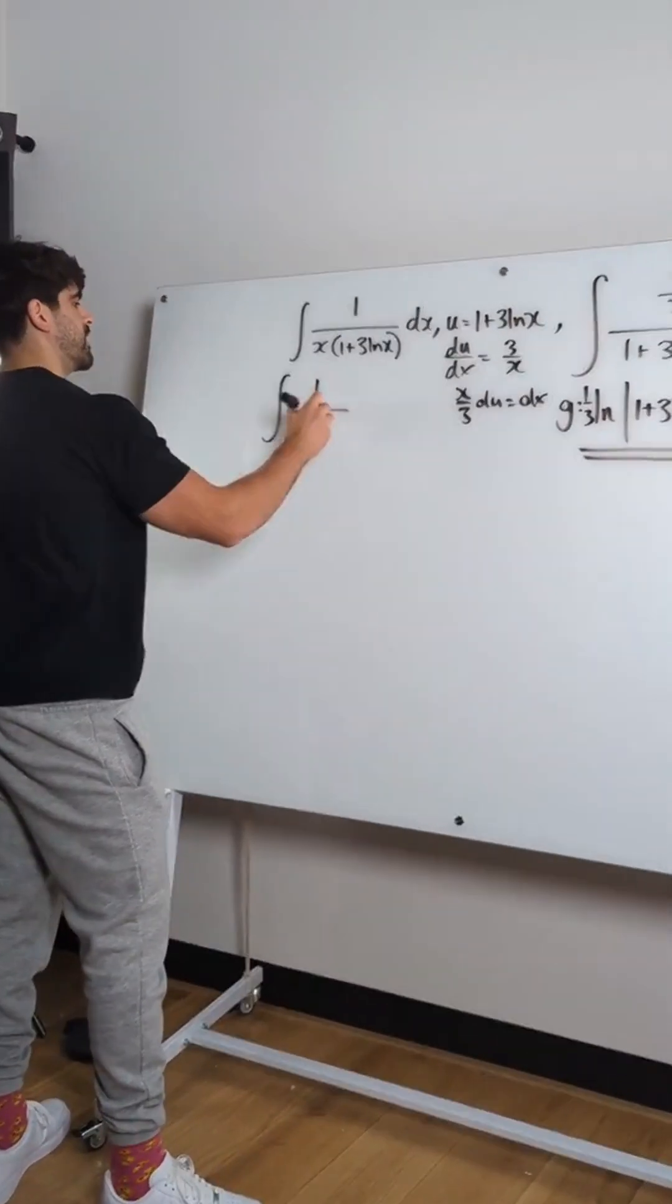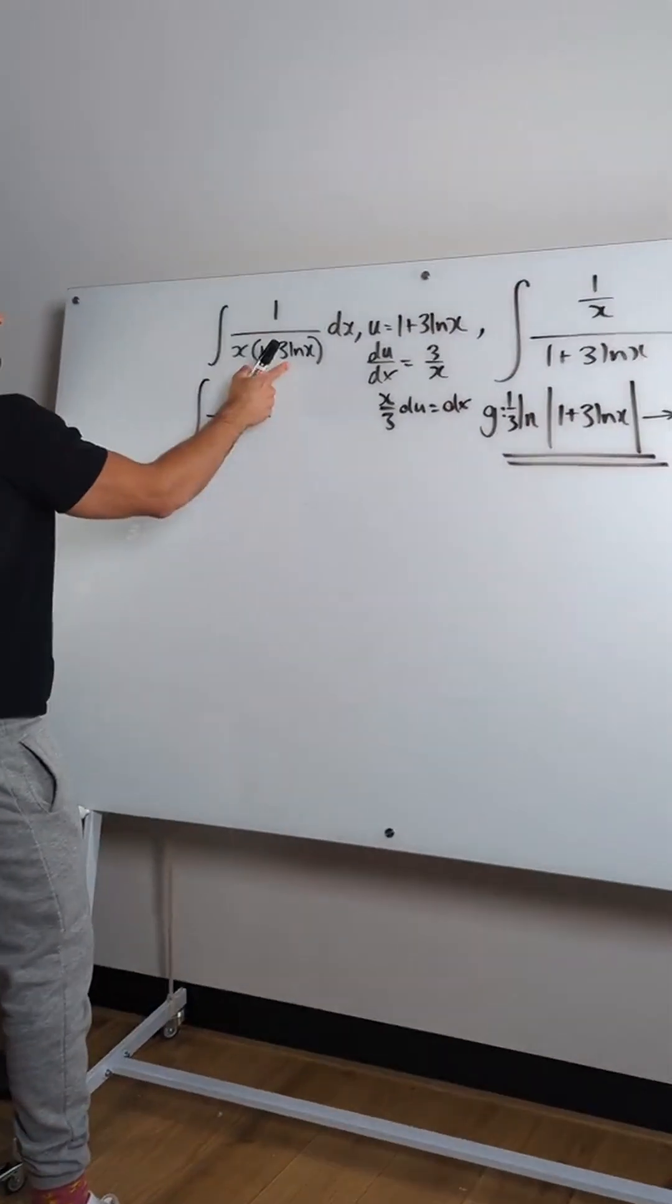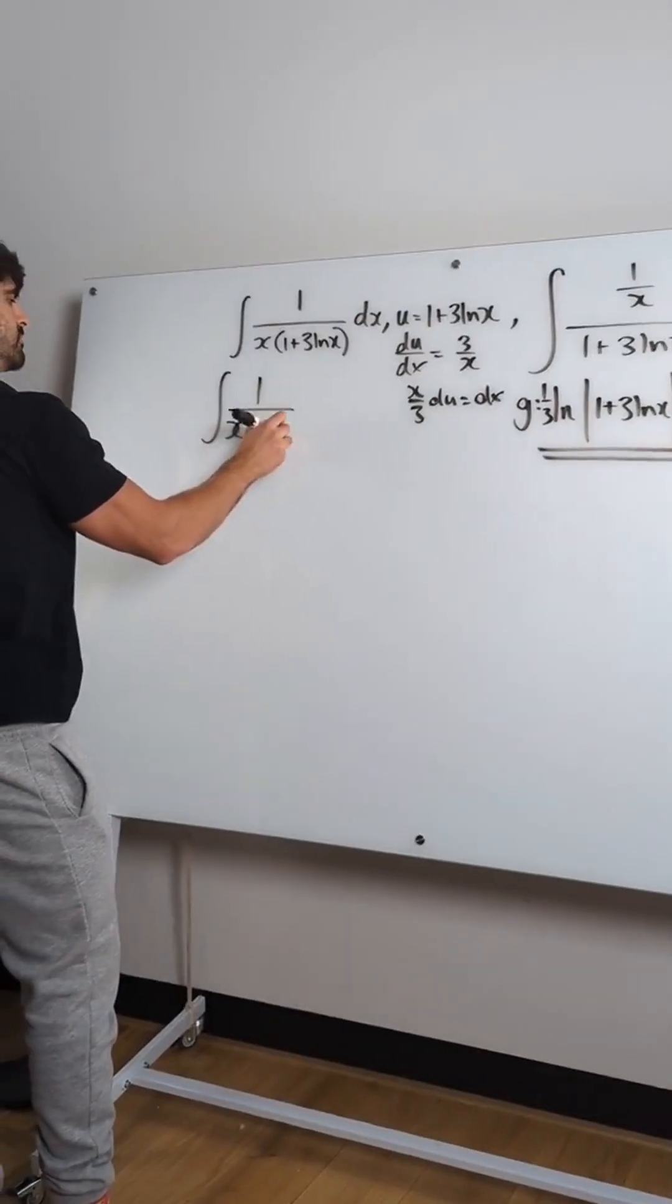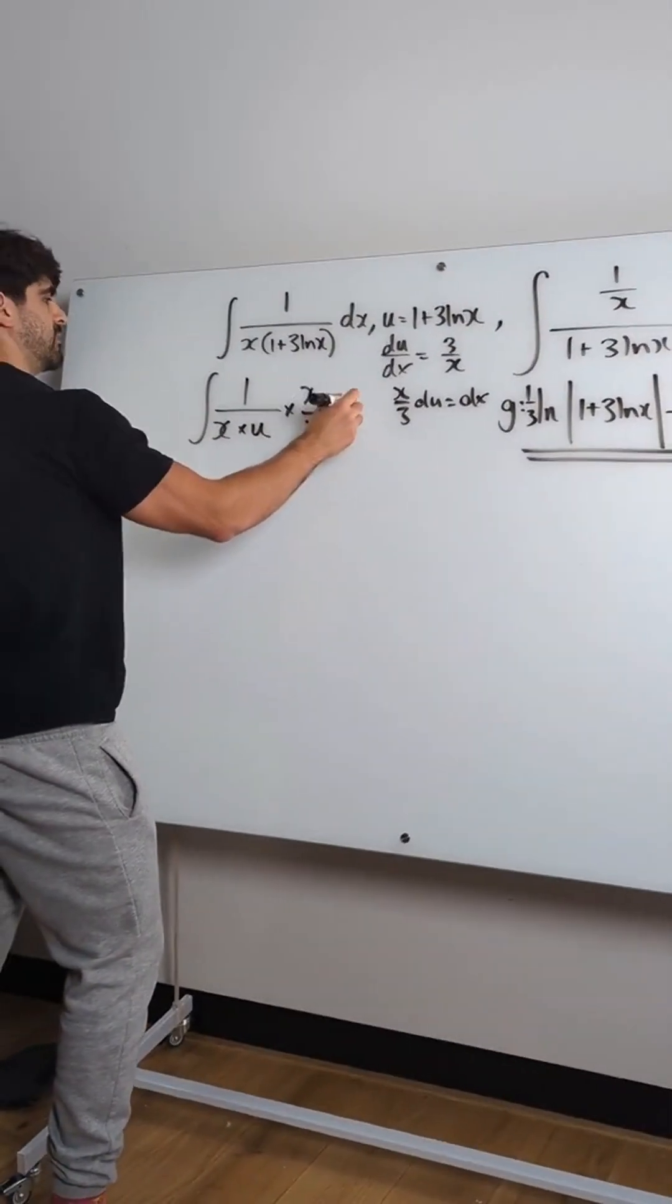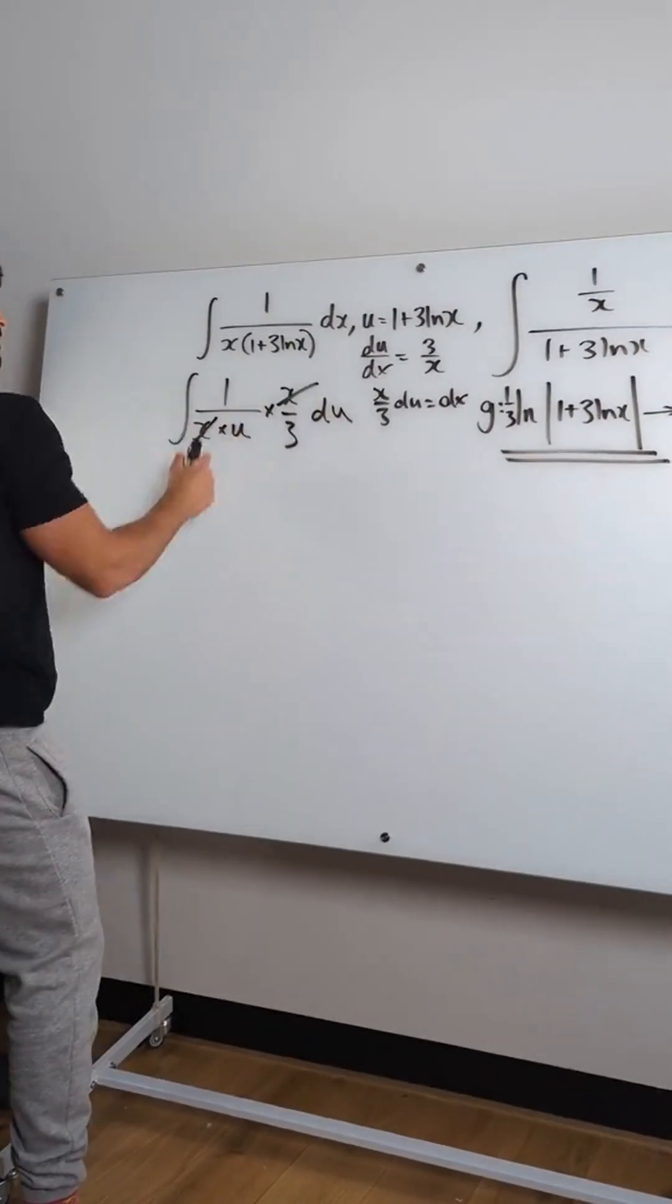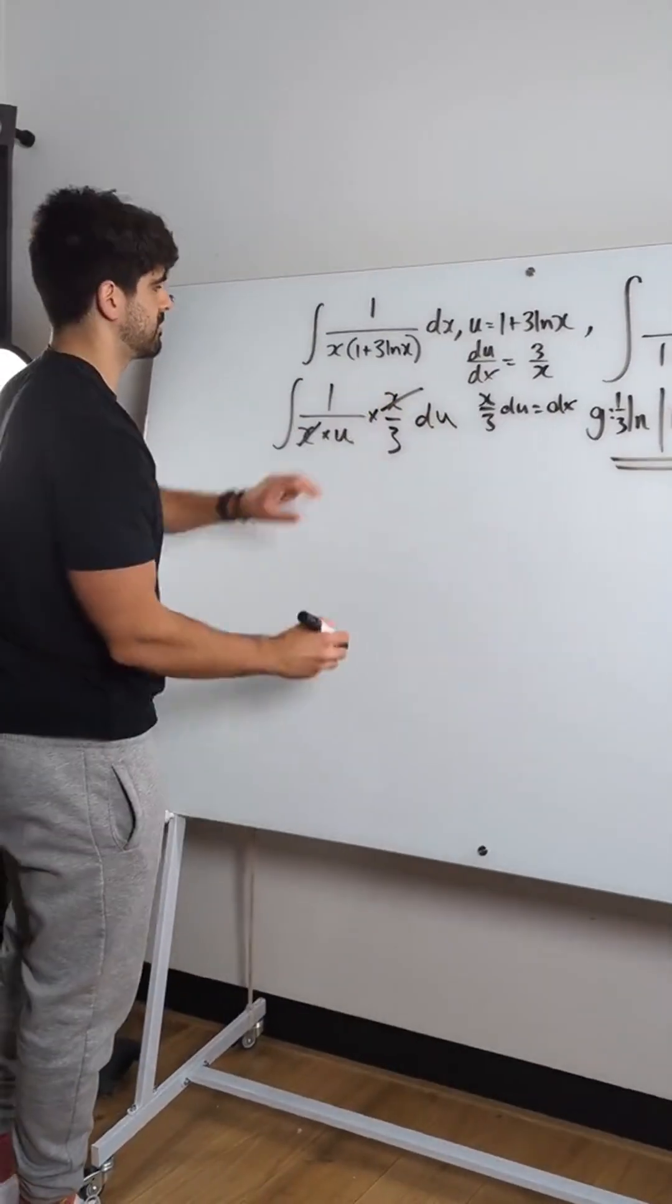So we get the integral. 1 over x. And that, we have substituted as u. Times x over 3 du. The x's cancel. This one third. You can take it outside of the integral.